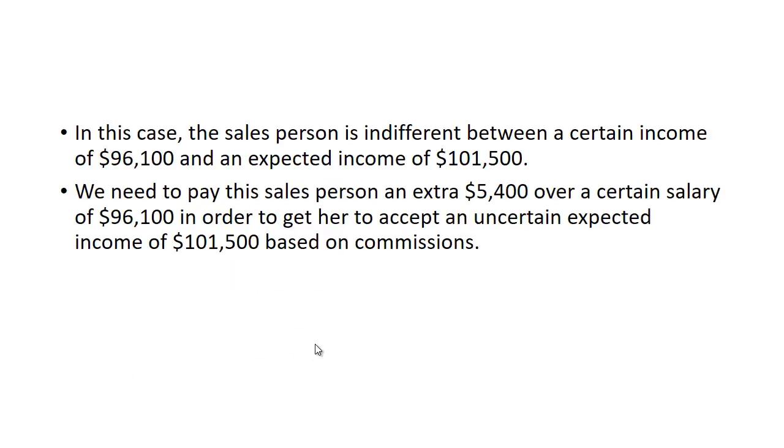In this case, the salesperson is indifferent between a certain income of $96,100 and an expected income of $101,500. We need to pay this person an extra $5,400 over a certain salary of $96,100 in order to get her to accept an uncertain expected income of $101,500 based on commissions.